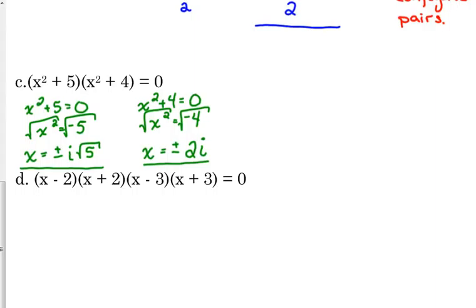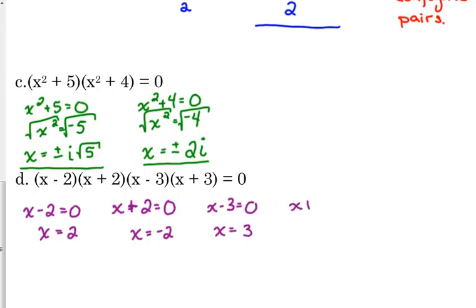Last one. This one's pretty simple. Straightforward. Just set all of those equal to zero. Solve for x. So we get positive two, we get negative two, we get positive three, and we get negative three.